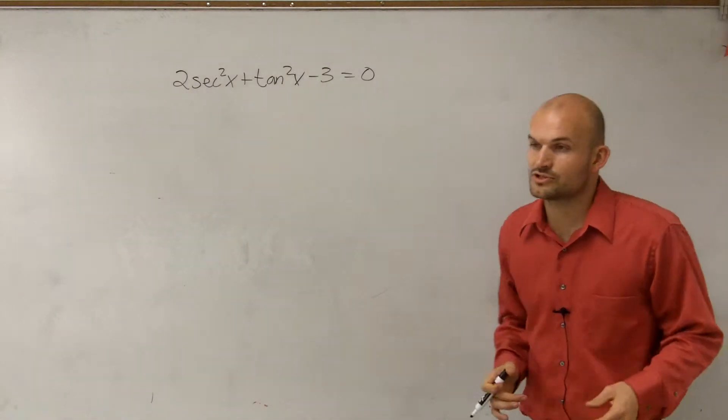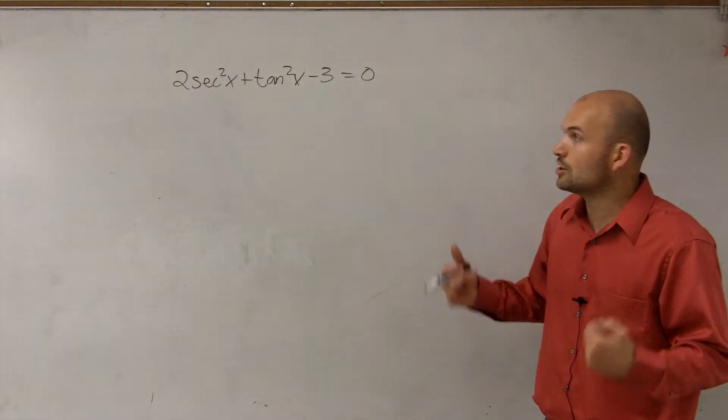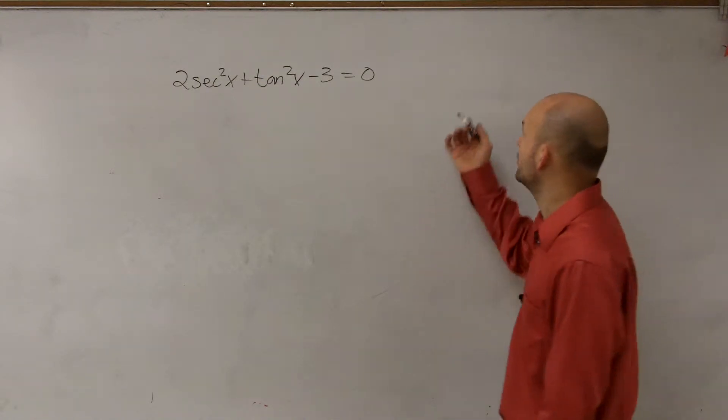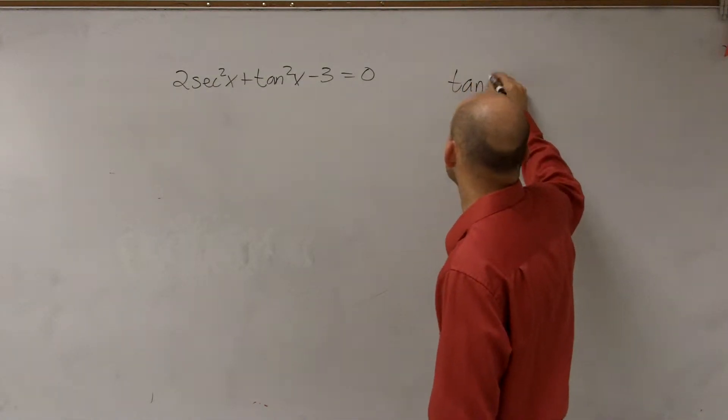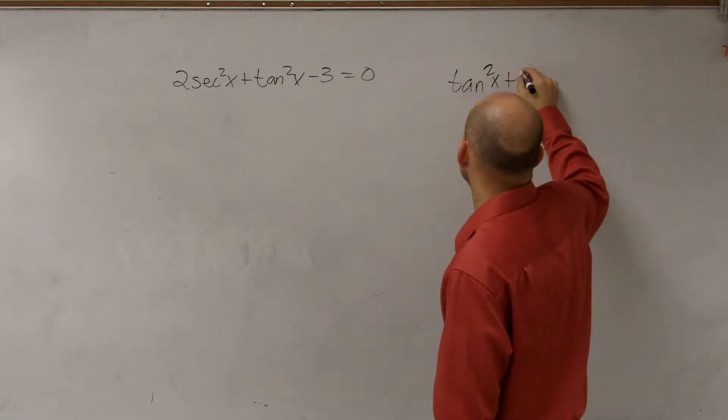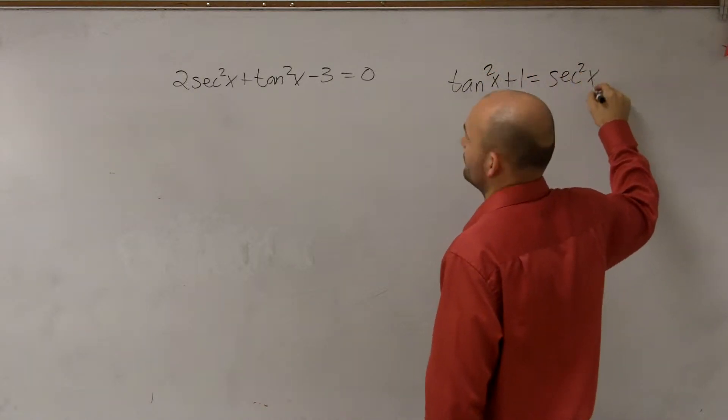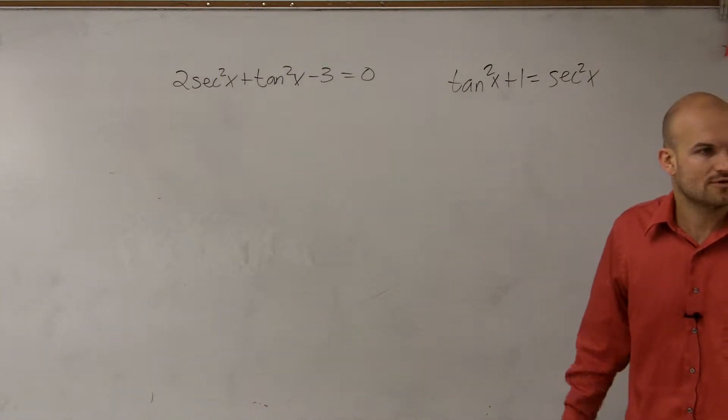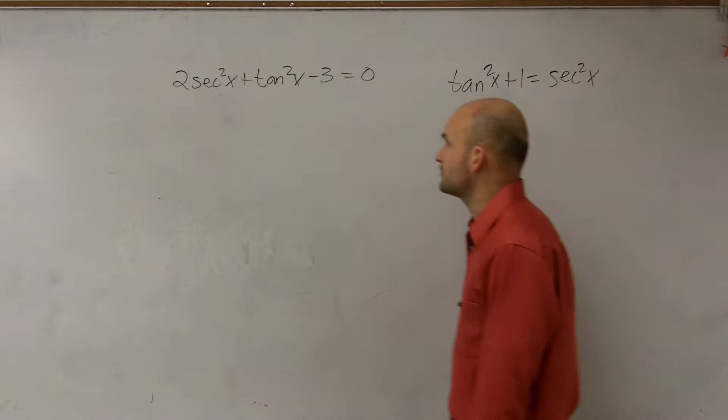So what we're going to want to do is solve for tangent or solve for secant. It doesn't really matter which way you want to look at it. We know that Pythagorean identity that we wrote is tangent squared of x plus 1 equals secant squared of x. So we just need to determine which one do we want to solve for and really to work with.